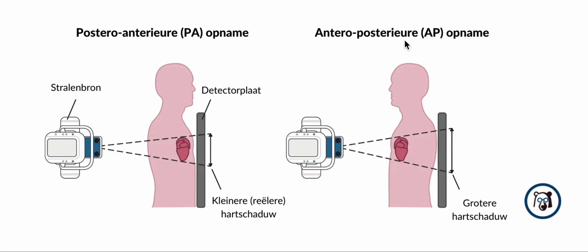On an anterior posterior view, there is much more distance between the heart and the detector plate, and so the heart shadow will be magnified, meaning that a cardiothoracic ratio calculation would be inaccurate.